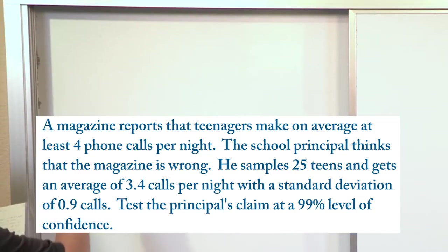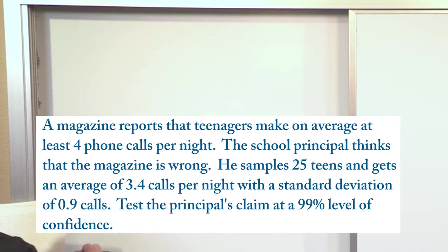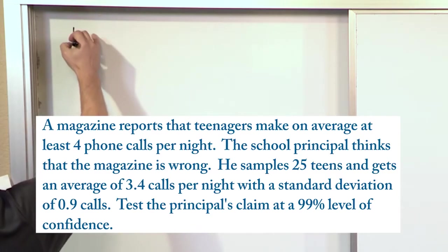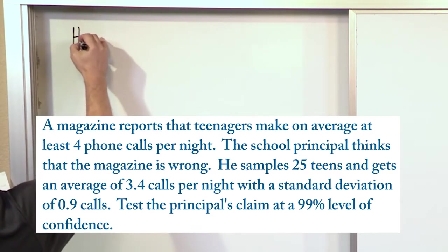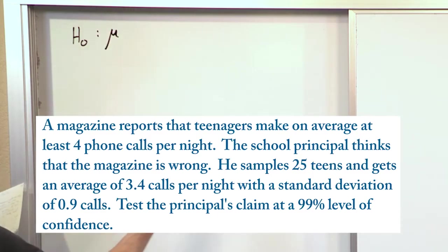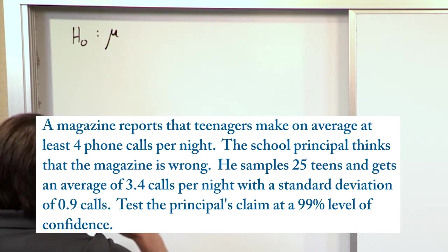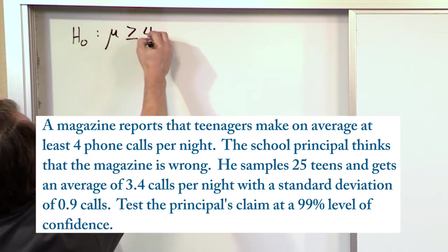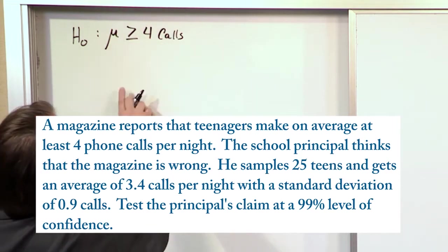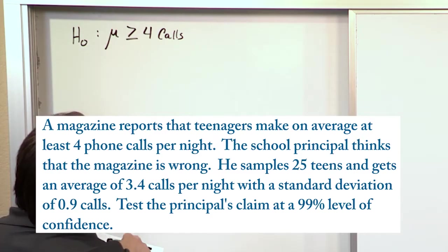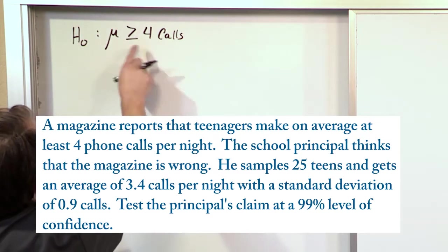For this particular case, the magazine reports teenagers make, on average, at least four phone calls per night. So that's going to be the null hypothesis — it's a mean, and it's saying greater than or equal to four calls per night. It doesn't say greater than or equal to explicitly; it just says at least four calls, which means four or greater.